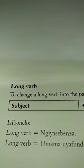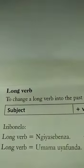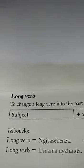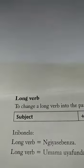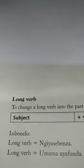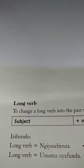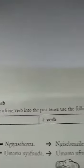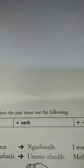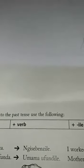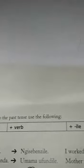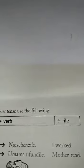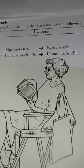Long form in the present tense: Umama u ia funda — mother is reading. Uia funda is the present tense form. Past tense: Umama u fundile — mother read, or mother was reading.